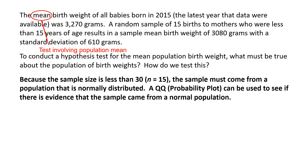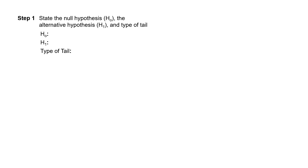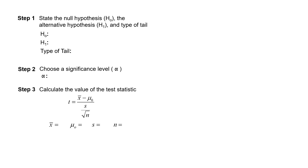If the plot indicates a roughly linear relationship, that gives evidence the sample comes from a normal population, and a small sample size is fine. Since this involves a population mean, the steps are exactly the same as for a population proportion. For step three, since we are dealing with a population mean, the test statistic is a t-statistic: x-bar minus the assumed population mean, divided by the standard error.